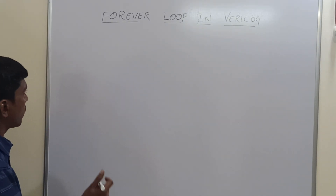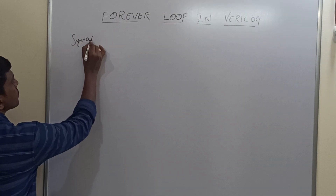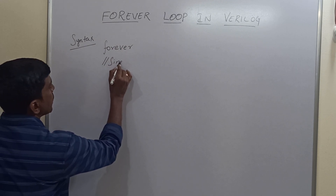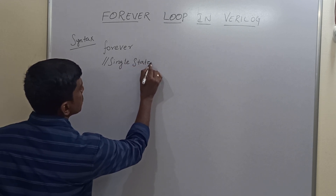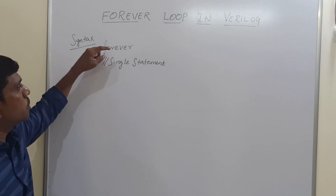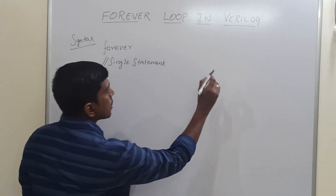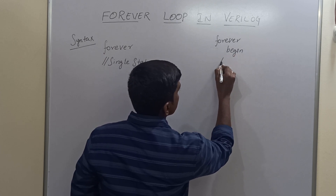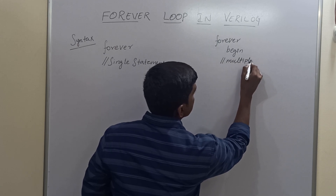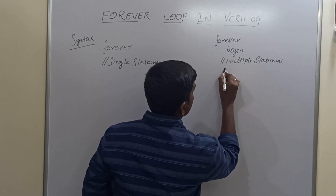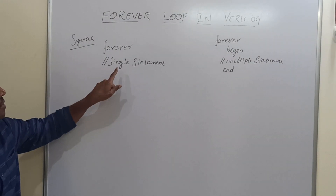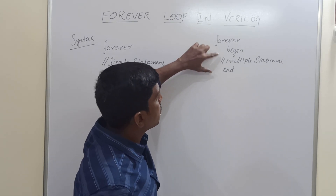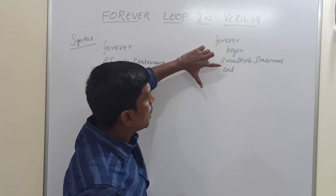Now I am going to write the syntax for the forever loop. The first syntax is for a single statement: 'forever single_statement;' — for a single statement we don't need to use begin and end. The second syntax is for multiple statements: 'forever begin multiple_statements end' — if the user uses multiple statements within a forever loop, the loop starts with begin and closes with end.